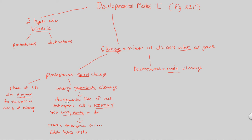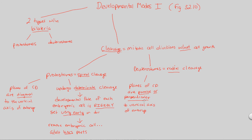Now let's juxtapose this with the deuterostome side of the cleavage story. In deuterostomes, the planes of cell division are parallel or perpendicular to the vertical axis of the embryo — that's the key difference from protostomes. So when you think of radial cleavage in deuterostomes, remember parallel or perpendicular; and in protostomes, spiral cleavage means diagonal cell division. Figure 32.10 will help visualize this more clearly.